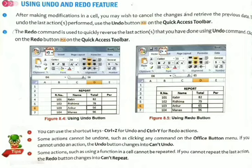Some actions such as using a function in a cell cannot be repeated. If you cannot repeat the last action, the redo button cannot be used. Similarly, if you cannot undo, the undo button will change into 'can't undo'.